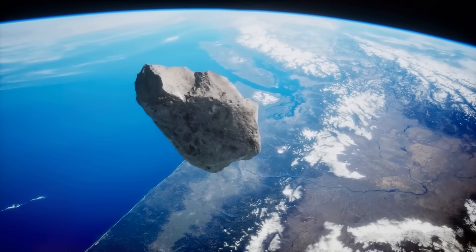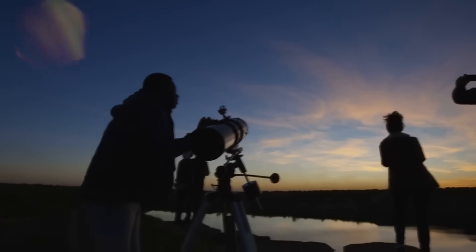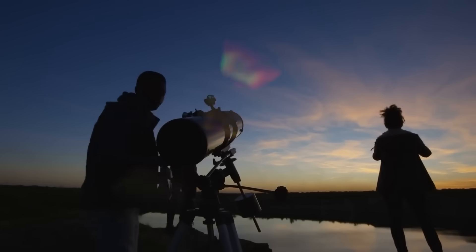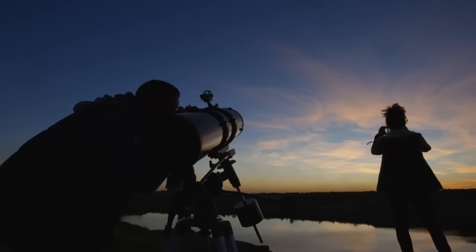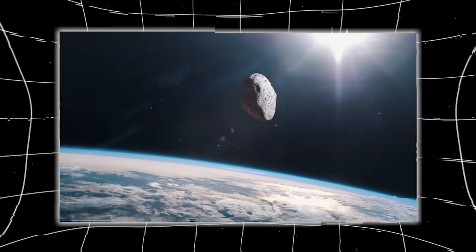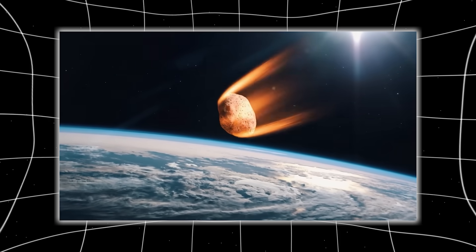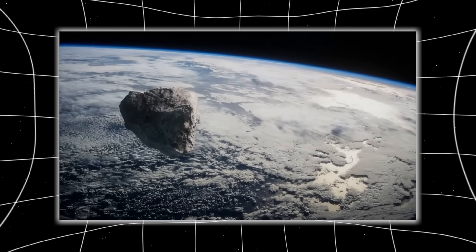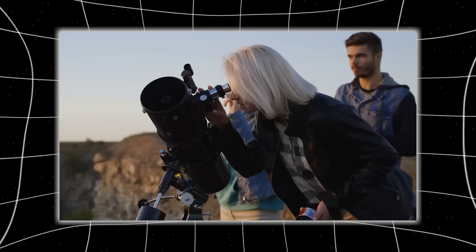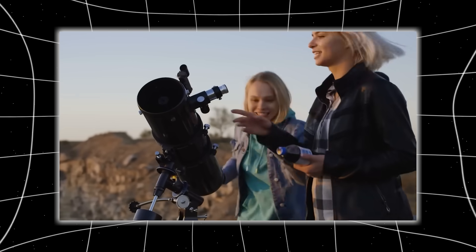Its orbit didn't follow any of the known gravitational loops of comets or inner solar system wanderers. And when astronomers reversed its trajectory through simulation, its origin pointed not to the Oort cloud, not to Neptune, but to interstellar space—possibly the core of our galaxy. This wasn't a leftover rock from the formation of the solar system. This was something that had been traveling through the dark for tens of thousands of years, unseen. And now it had crossed the threshold into our solar domain. But the deeper mystery wasn't just where it came from.